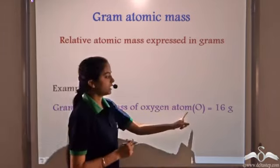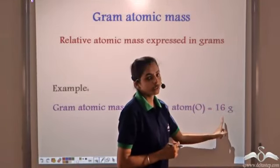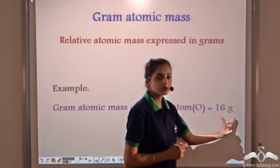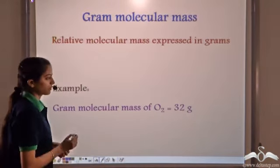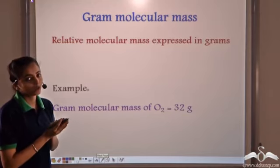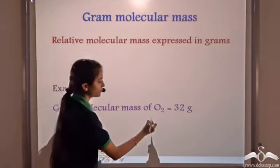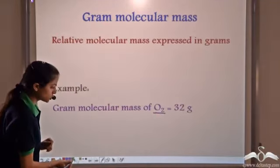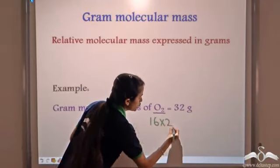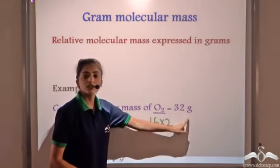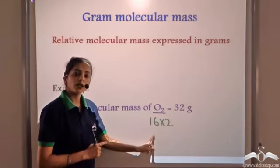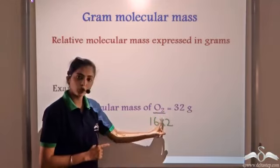For oxygen, the relative atomic mass is 16. When expressed in grams, that is 16 grams — the gram atomic mass of oxygen. Just as we have gram atomic masses, we have gram molecular masses when talking of molecules. For the oxygen molecule there are two oxygen atoms, each with gram atomic mass 16, so the gram molecular mass of the oxygen molecule is 16 × 2 = 32 grams.